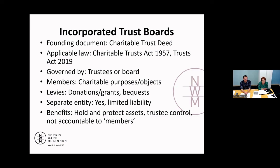Just to recap on the benefits: the board will actually be the owner of the assets, not the individuals. You've got the trustees making the decisions, and the trust deed will have processes around how those decisions are made. The trustees won't be accountable to members because there aren't actually members of the incorporated trust board — there's just a purpose or object that the trust needs to comply with. And that's the incorporated trust board.